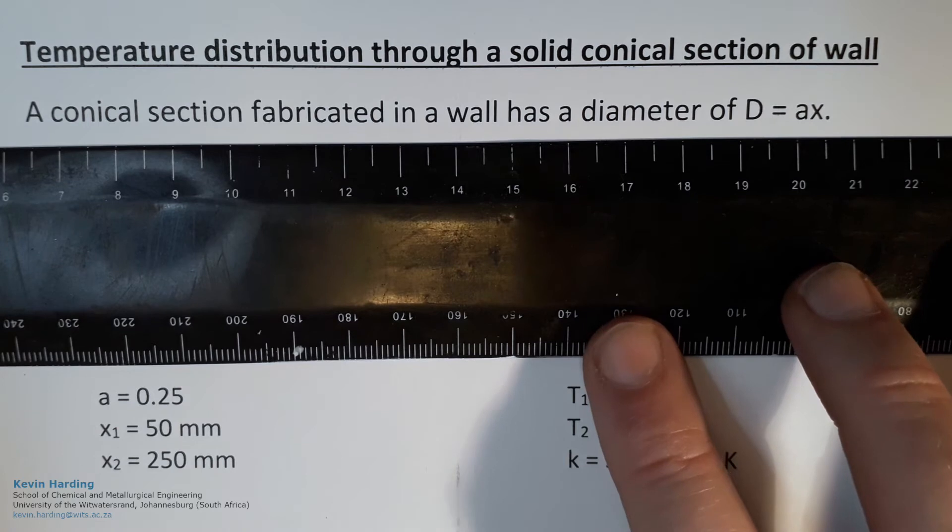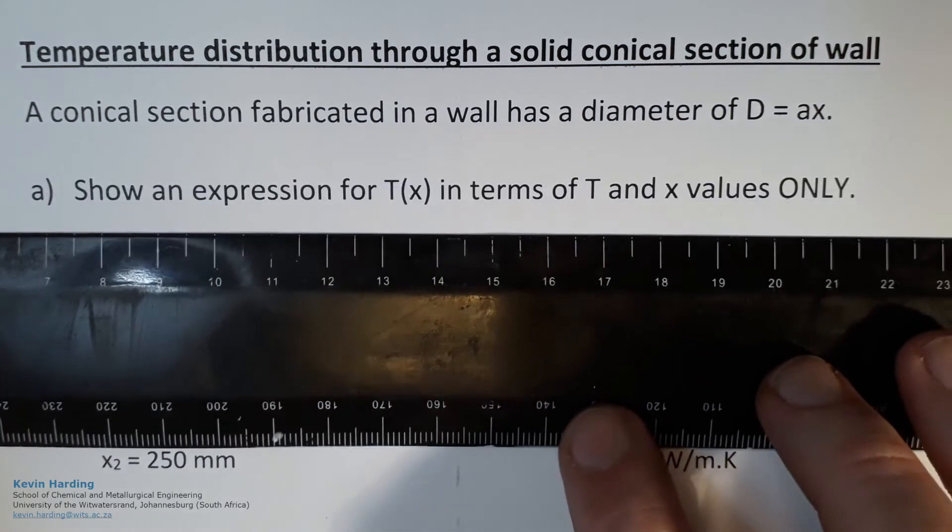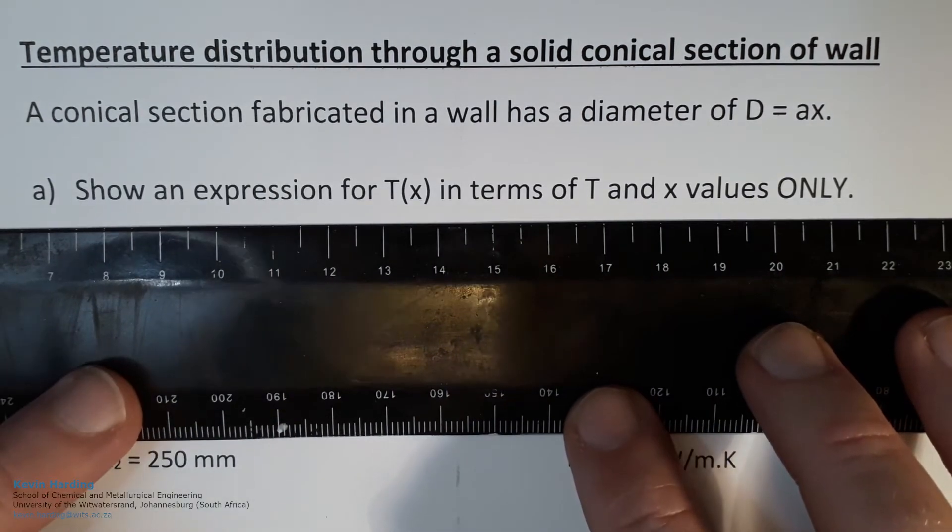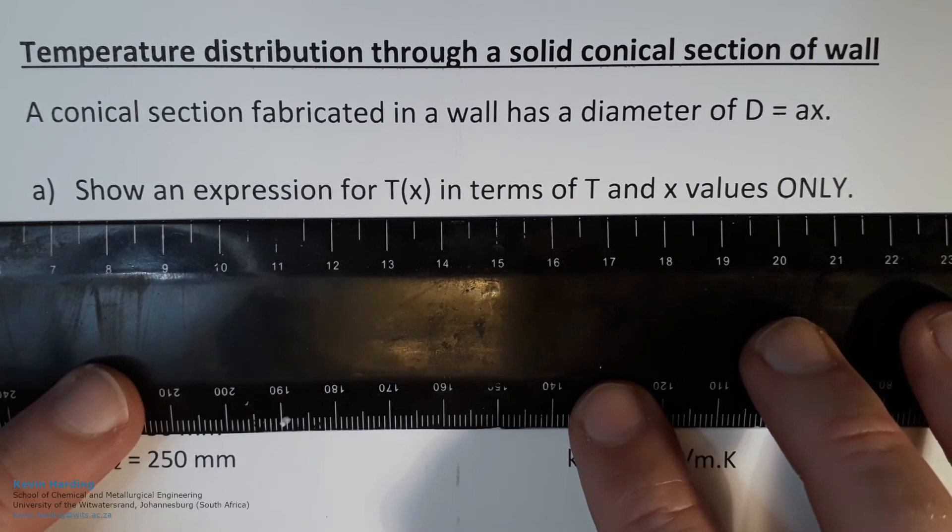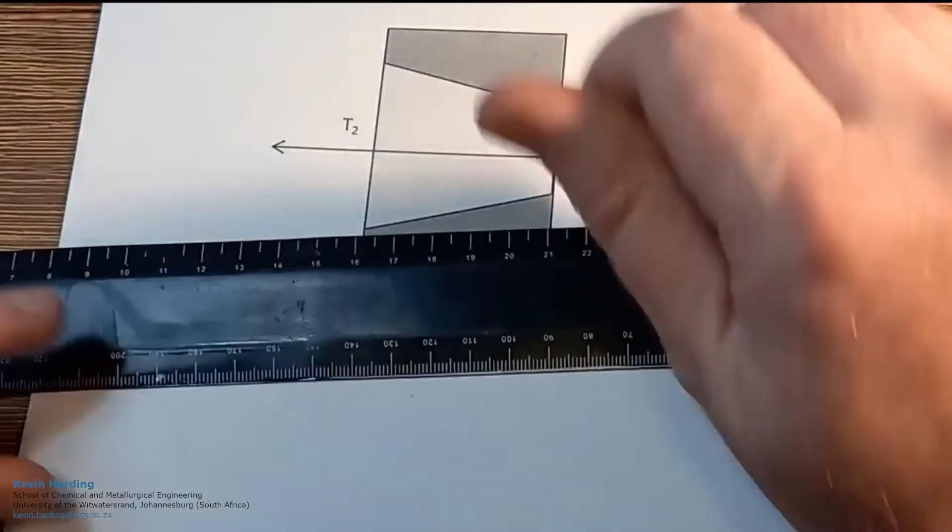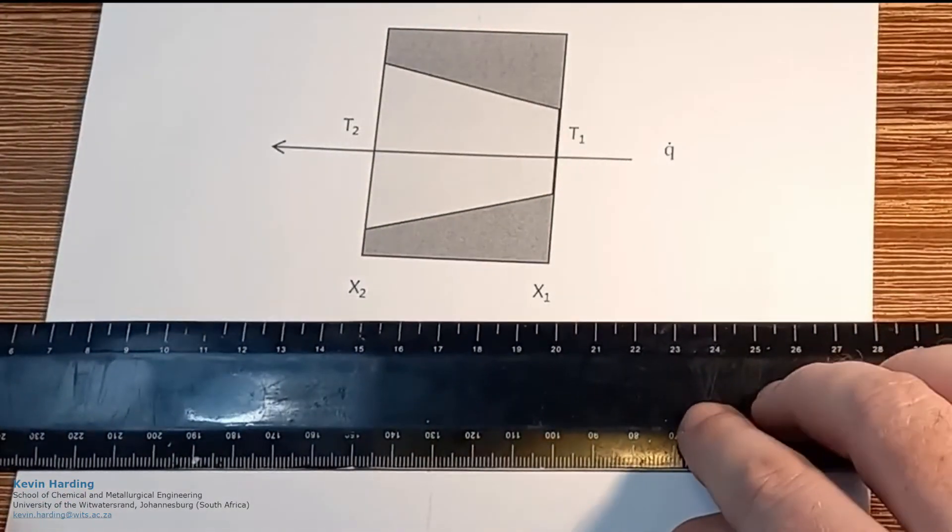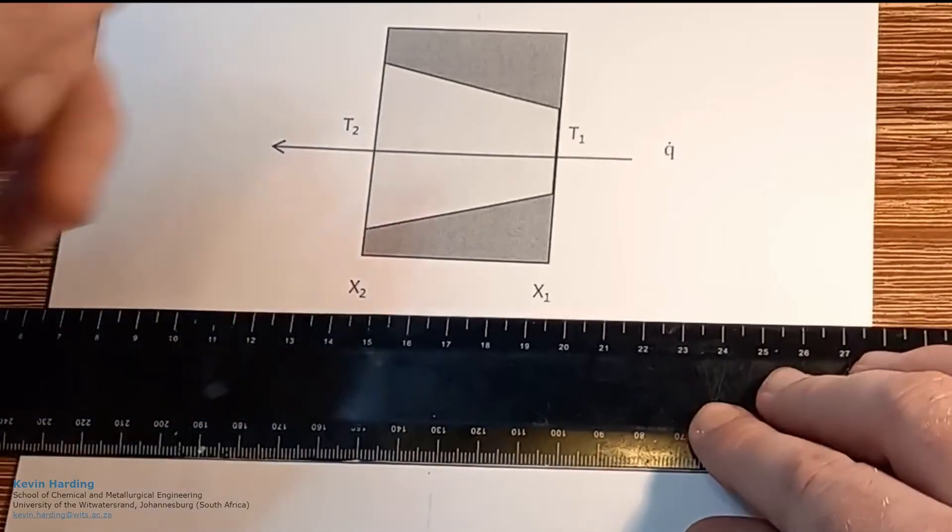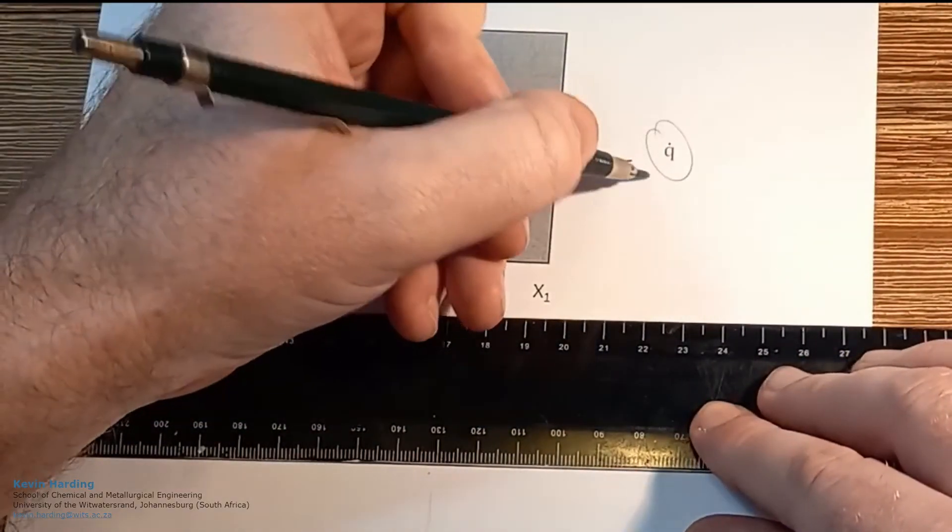A conical section fabricated in a wall has a diameter of d equals ax. Show an expression for temperature in terms of t and x values only. We're given a diagram here as well as some additional information. The conical section we're looking at in the wall has q on the right-hand side.